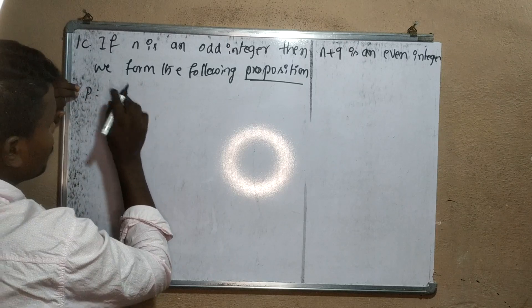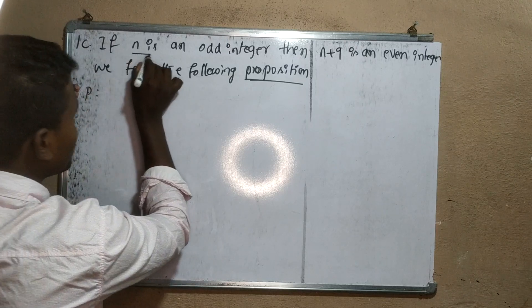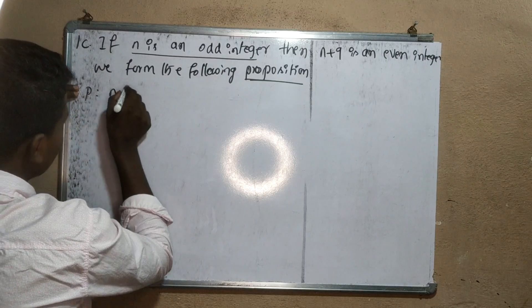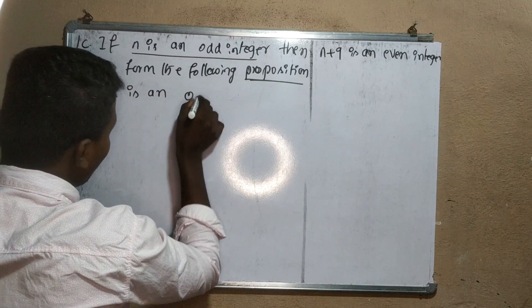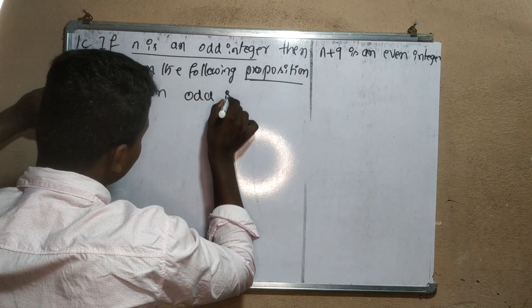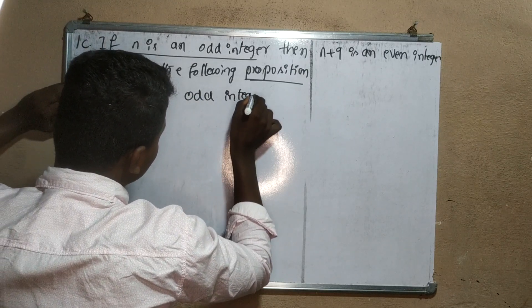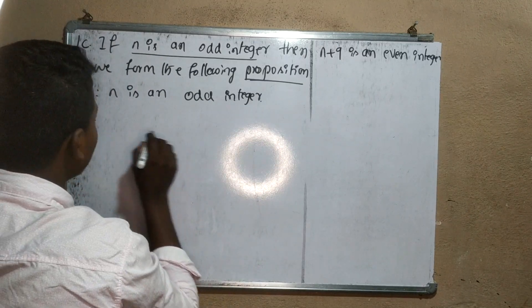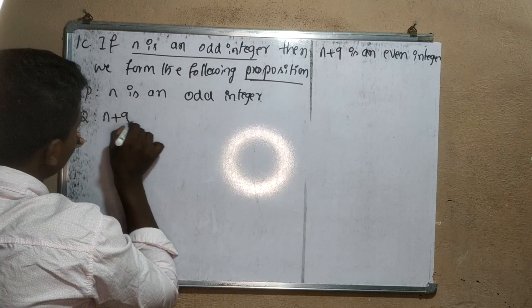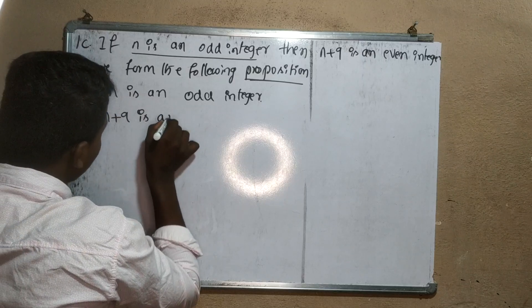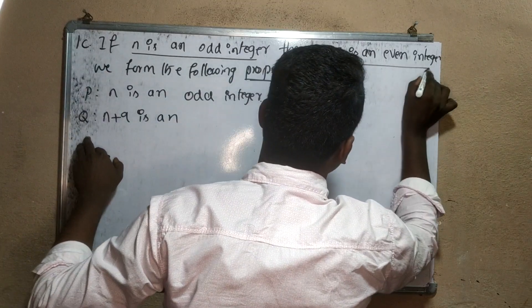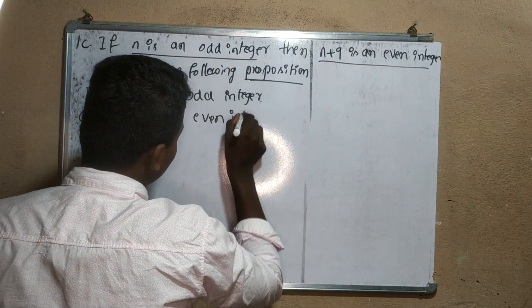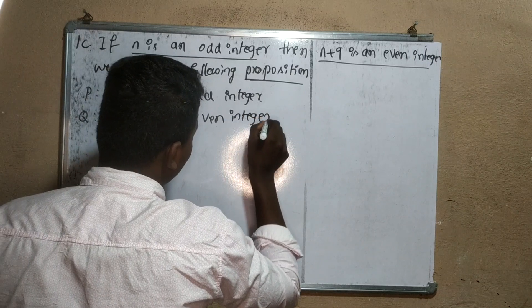So if n is an odd integer, that is our p. Next, q is that n plus 9 is an even integer. We will work with n as an odd integer.